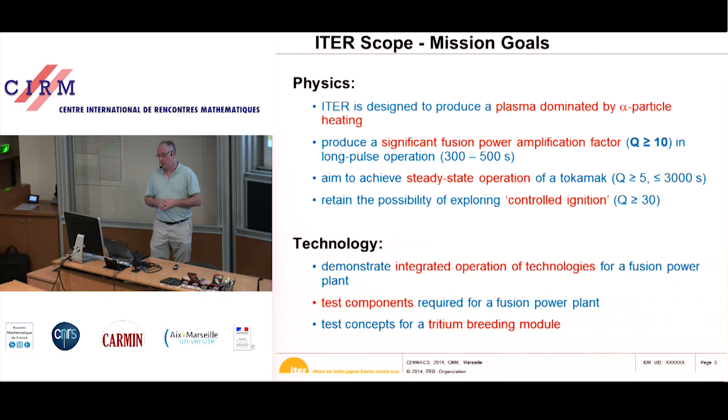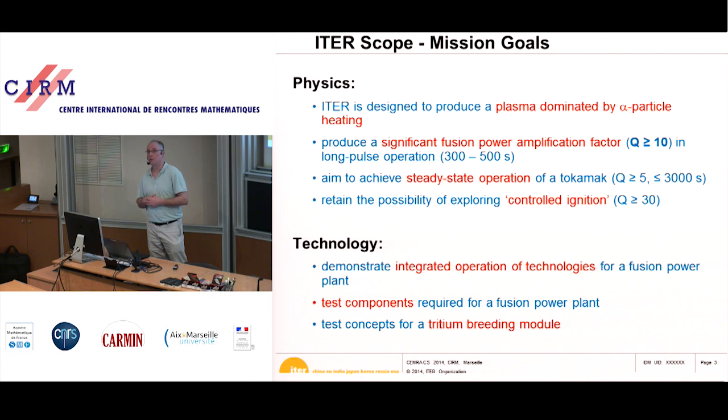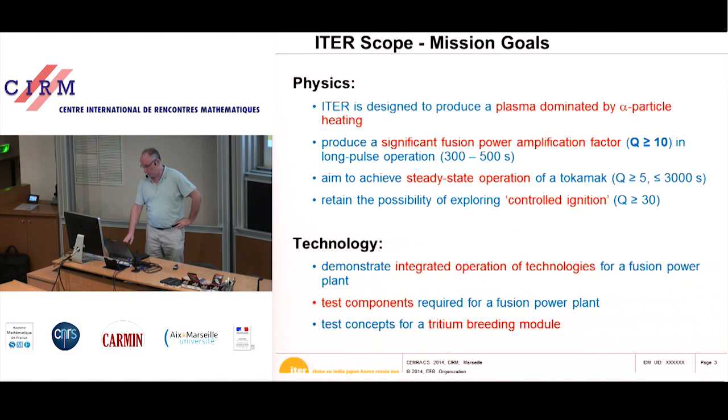We need to test components, and mostly test the tritium breeding blanket module. The fuel for a fusion reaction is deuterium and tritium. Tritium doesn't occur naturally, or very little, so it needs to be made in place in the tritium breeding modules. This will be studied for the first time on a tokamak, on a real machine.